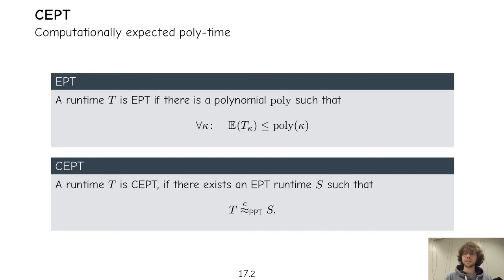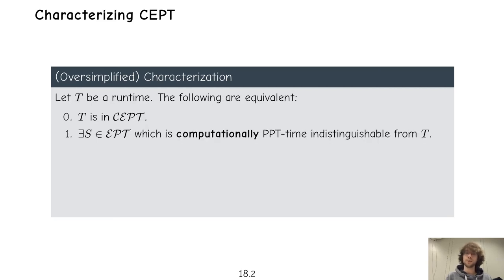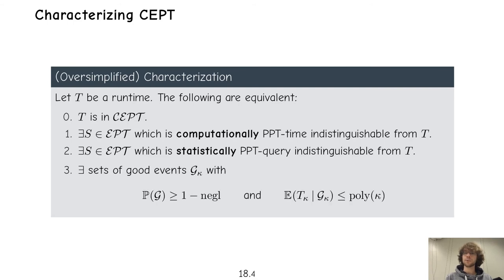This definition has a clean characterization: T is SEPT if and only if (1) there exists an expected-time s such that T and s are computationally indistinguishable under repeated samples; equivalently (2) the same holds for statistical indistinguishability under repeated samples (denoted PPT-query); and (3) there exists a set of good events with overwhelming probability such that conditioned on this set, the expectation of T is bounded by a polynomial. The good-event characterization is very useful for unconditional arguments, such as showing that introducing rewinding does not break SEPT, while the first characterization is useful for indistinguishability hops.